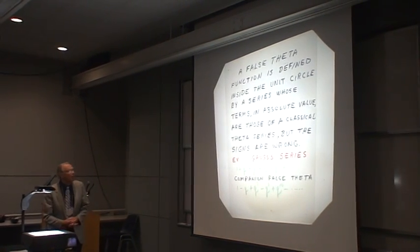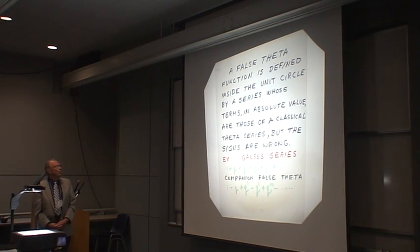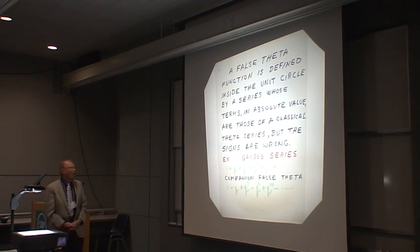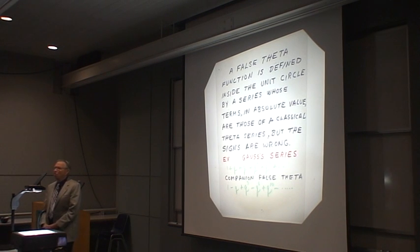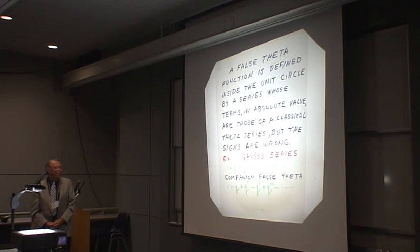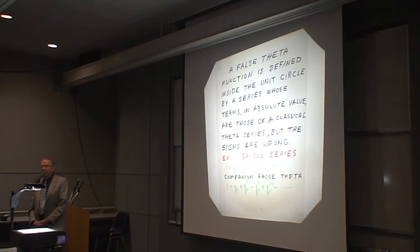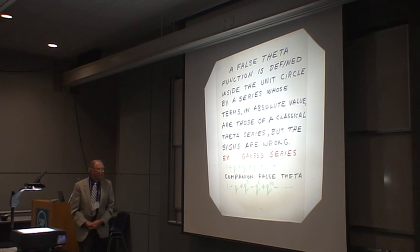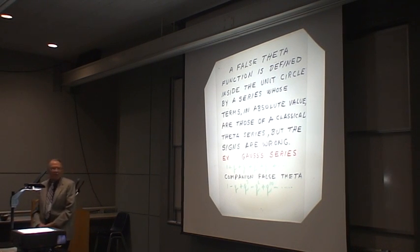What is a false theta function exactly? It's defined inside the unit circle by a series whose terms in absolute value are those of a classical theta series, but the signs are wrong. One of the most famous theta series is Gauss's triangular number series that you see listed here. But there's a companion false theta series which is Gauss's series except that it has the signs alternating.